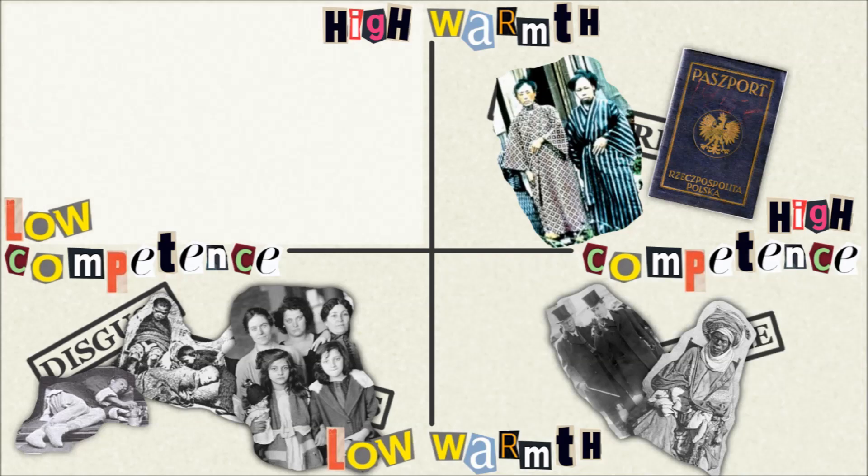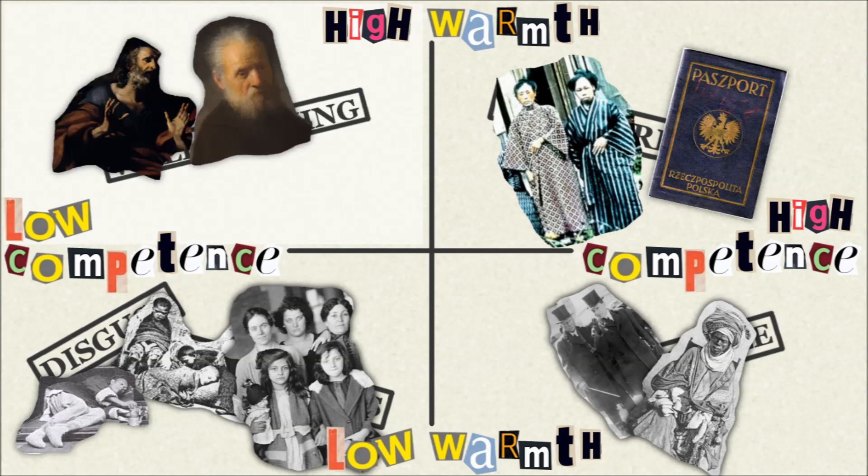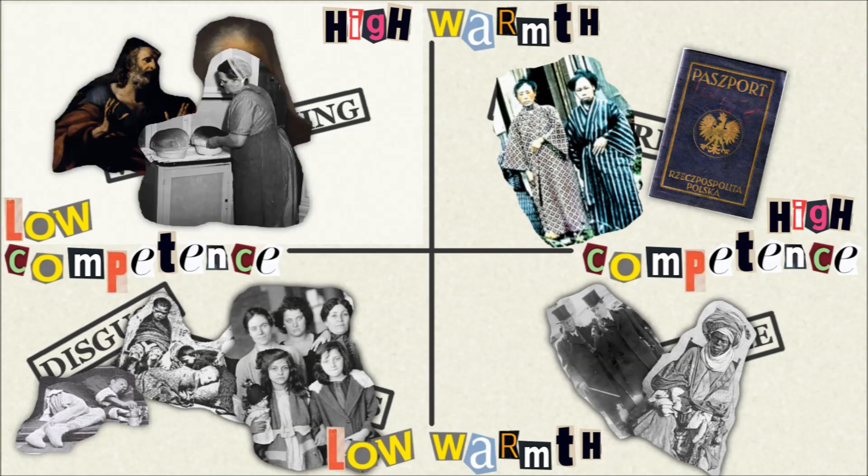The opposite stereotype zeroes in on groups seen as incompetent but well-intentioned, such as older people or people with disabilities. Women in traditional roles are often seen this way.